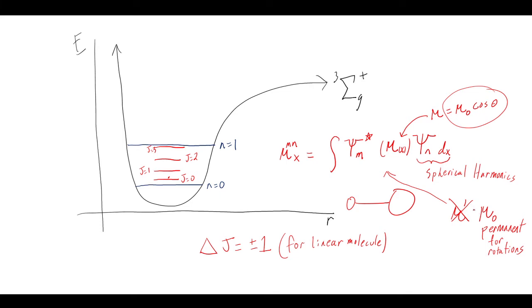For purely rotational transitions such as J=0 to J=1, you must have a permanent dipole. If we were using IR light, changing both rotational and vibrational states simultaneously, the situation is different. But for just microwave spectroscopy — not IR — the molecule must have a permanent dipole in order to be influenced by the microwave radiation.